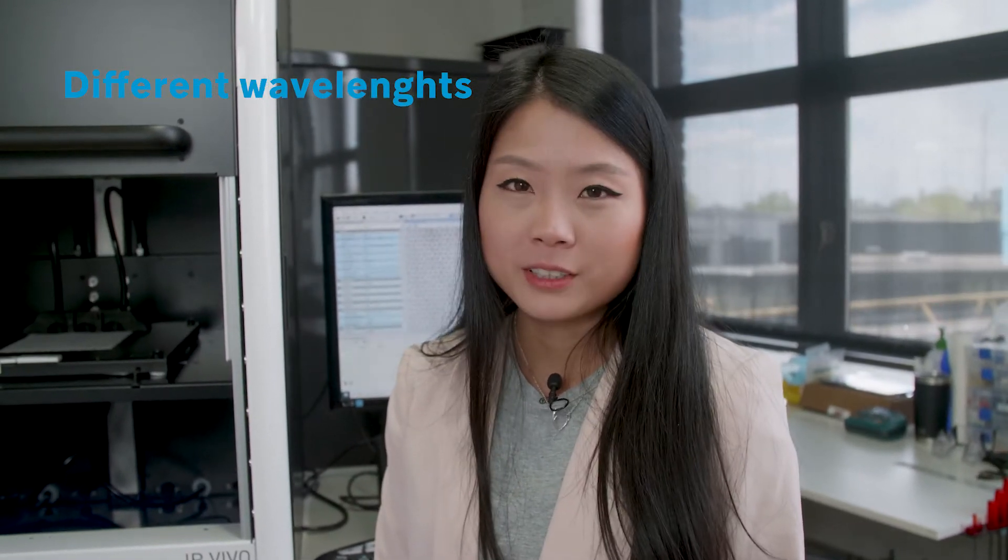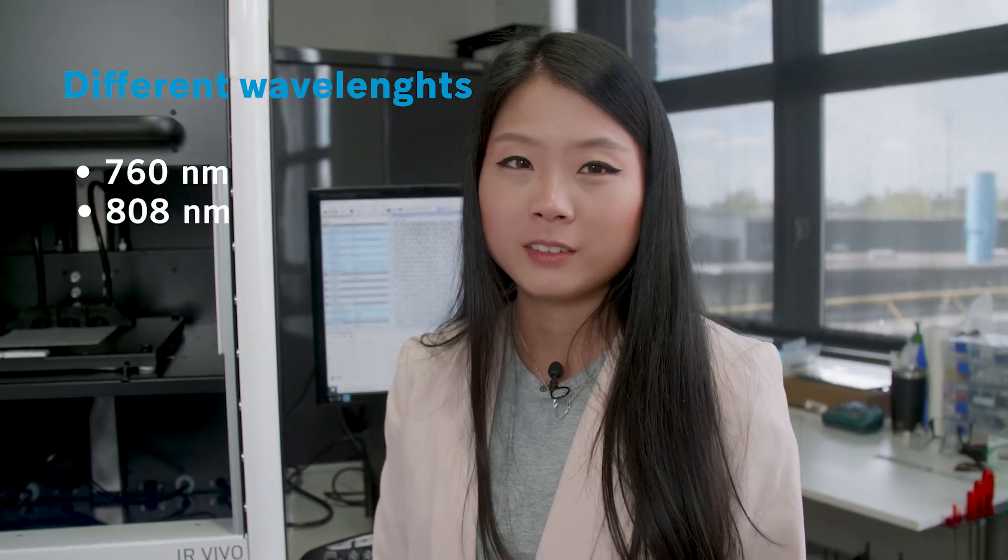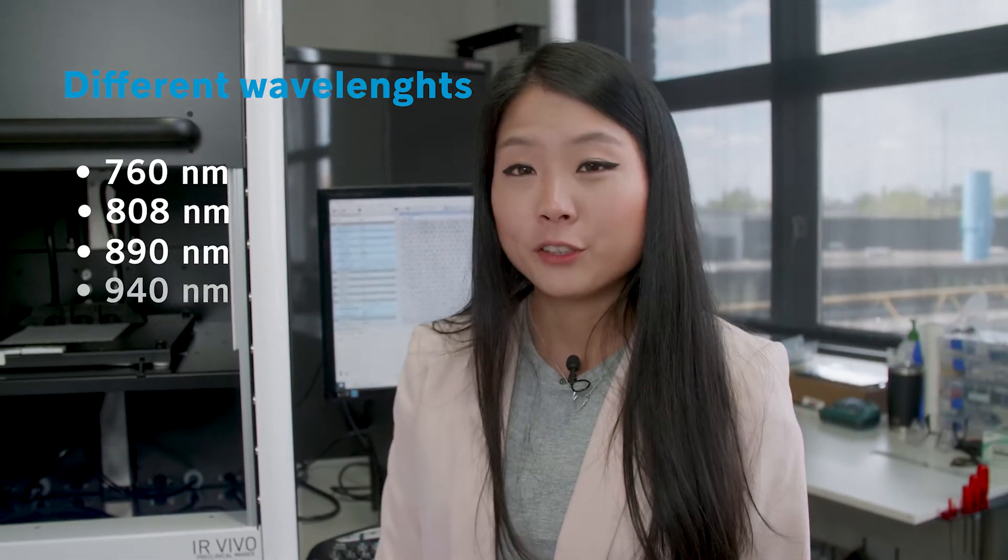First, the illumination module can have one to four different wavelengths. In this system, we have 760, 808, 890 and 940 nanometers.